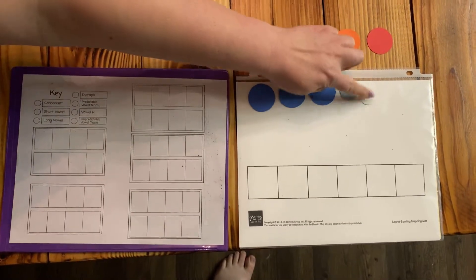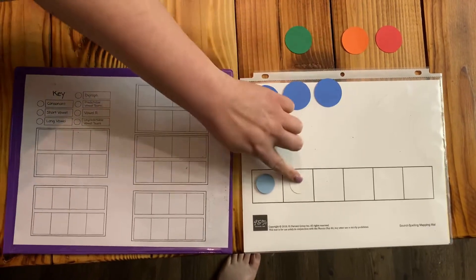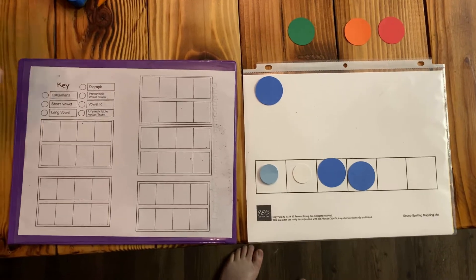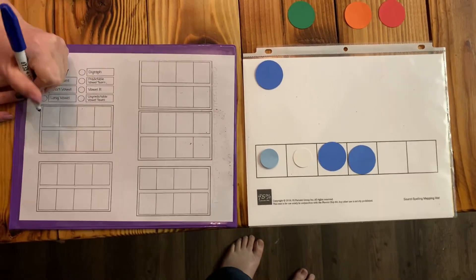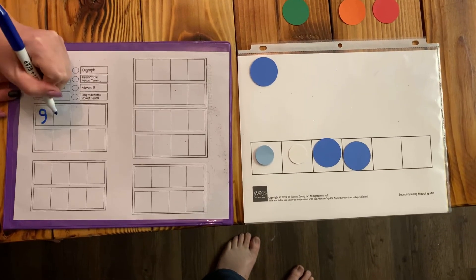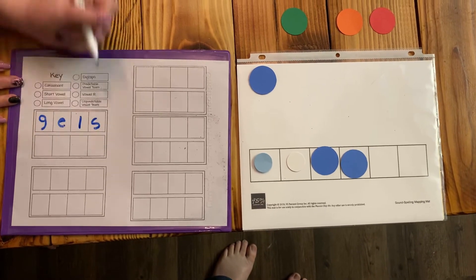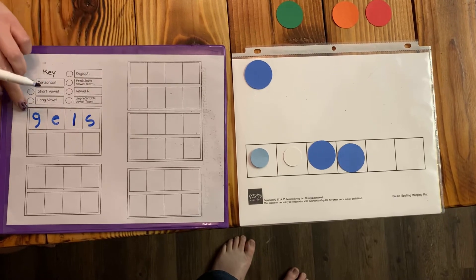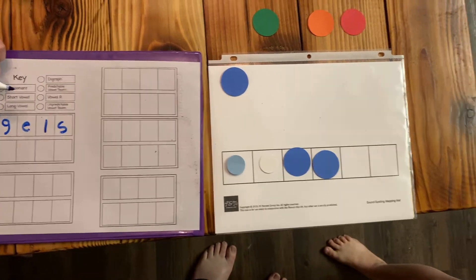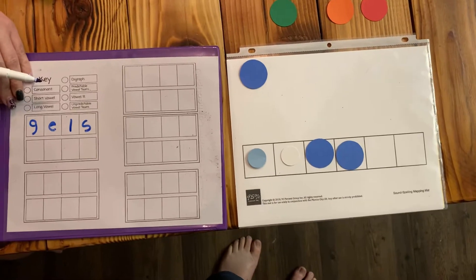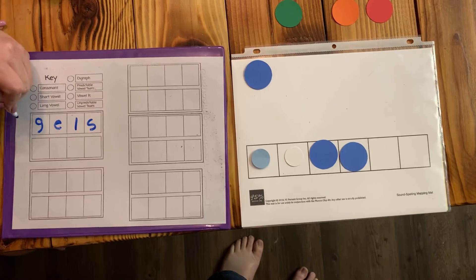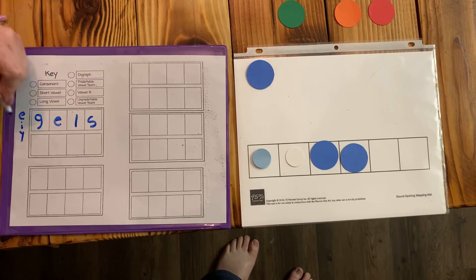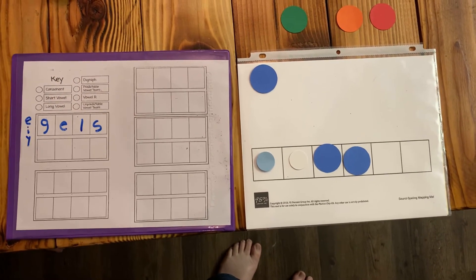So j, l, s, gels. We're going to write our sounds with our j, l, s, four sounds. And you're going to be using this light blue because it's a soft G, and it has the same rules as the soft C. The soft G happens for an E, an I, and a Y. So it's going to be the same rules which will help you guys remember.